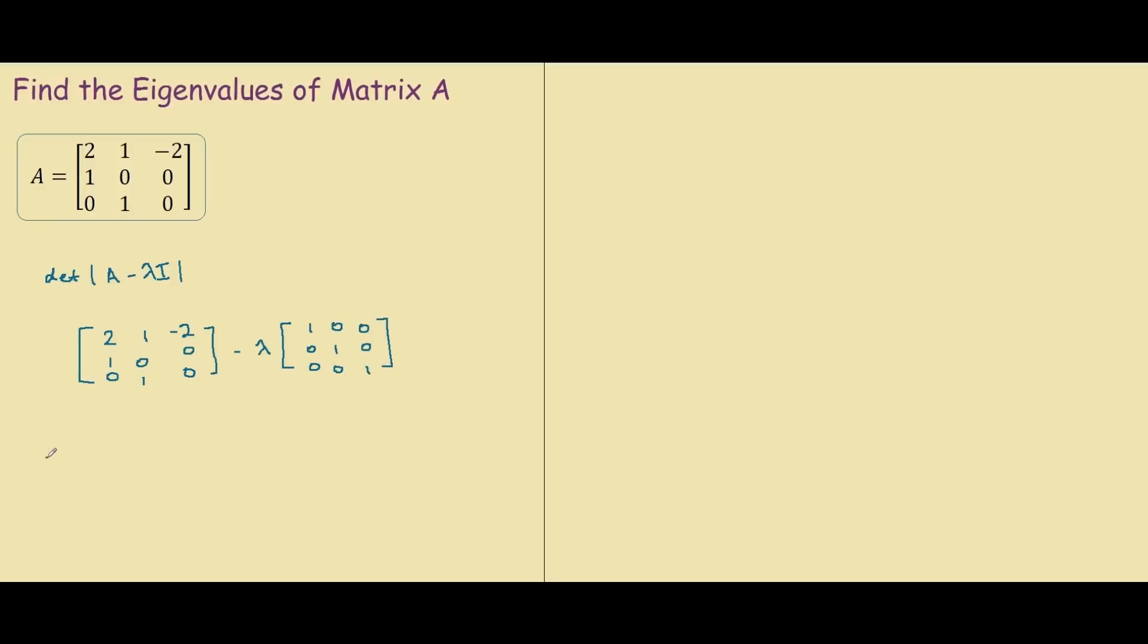And when we simplify this down, we have 2 minus lambda, 1, negative 2, 1, negative lambda, 0, 0, 0, 1 and negative lambda.